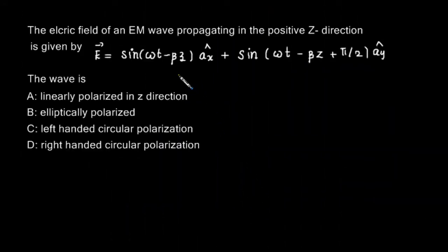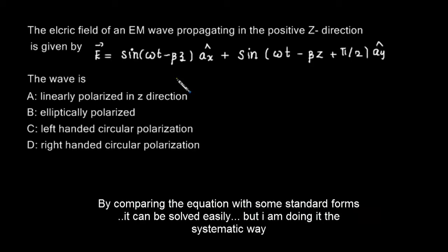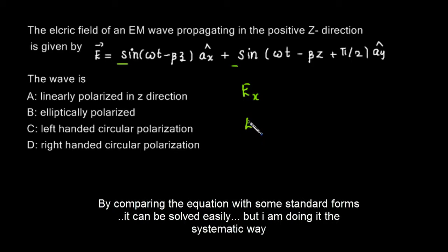This is another question regarding polarization. We are given the electric field vector of a wave propagating in the positive z direction, and we are asked what kind of polarization is associated with this wave. We have explained polarization in previous problems, so we will quickly check the kind of polarization. It is clear that the magnitude of the electric field in both the x and y directions are the same.